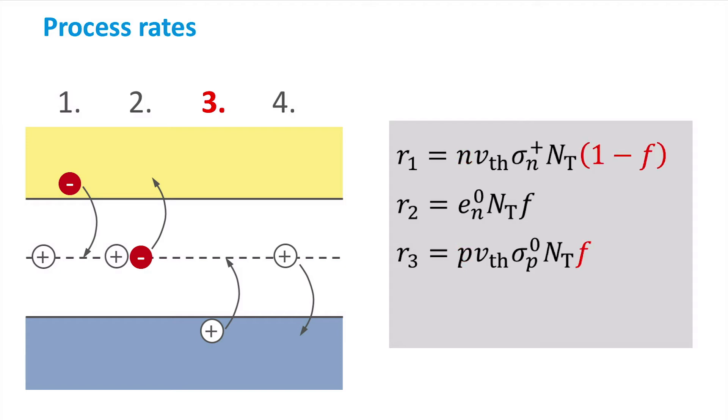and the trap vacancy of holes instead of electrons, which is equal to f instead of 1 minus f. The capture cross-section is now related to holes and has a neutral charge state.